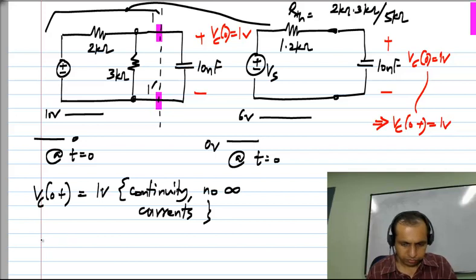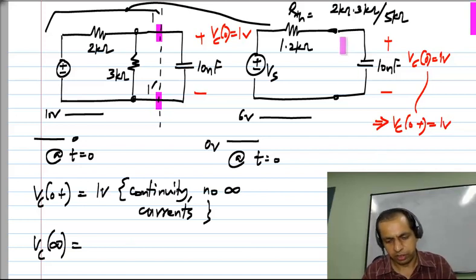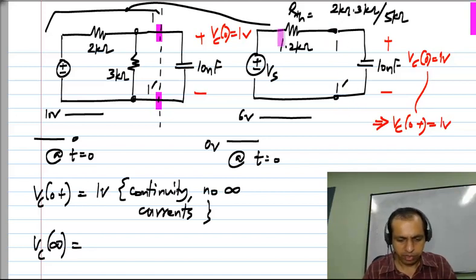Then VC of infinity, which is the final value, is computed by assuming that the capacitor is an open circuit. This is an open circuit, then the resistance here, it does not have any voltage drop across it. So all of VS appears between the terminals 1 and 1 prime. And VS, the final value is 6 volts, the 6 volts will appear there.